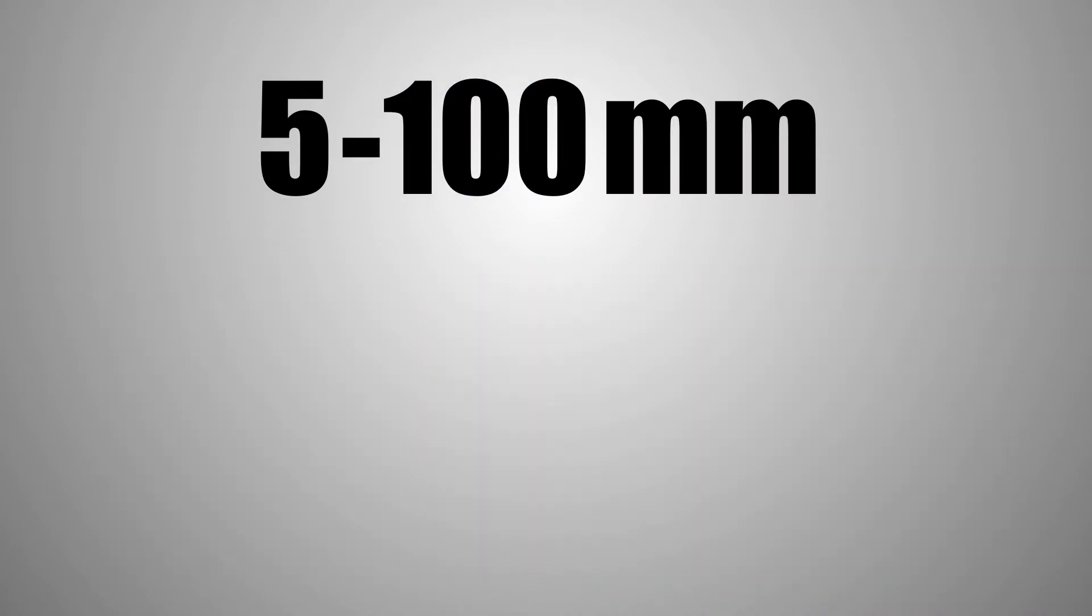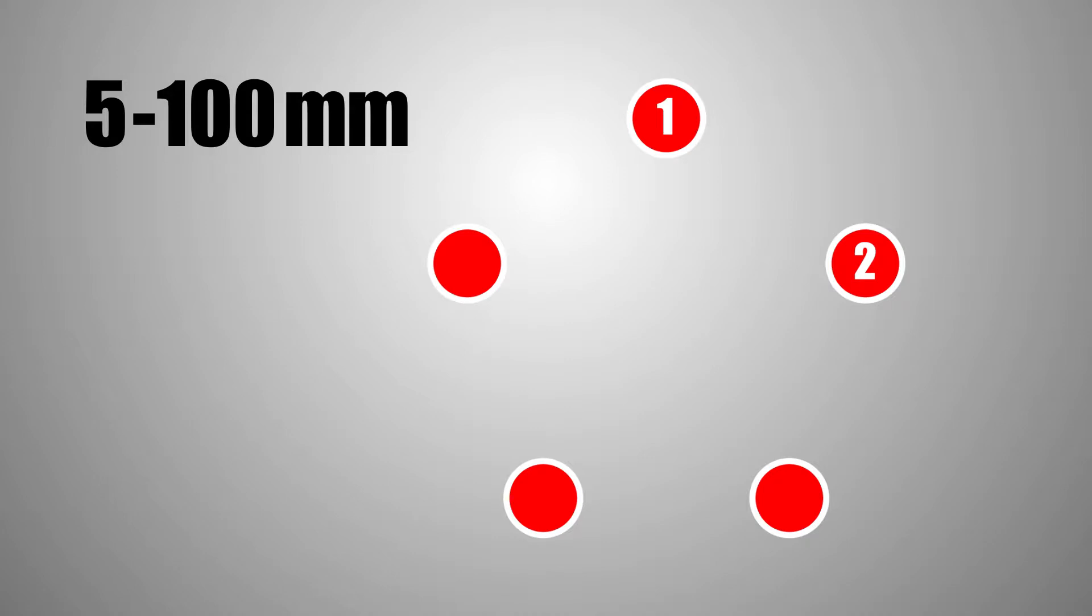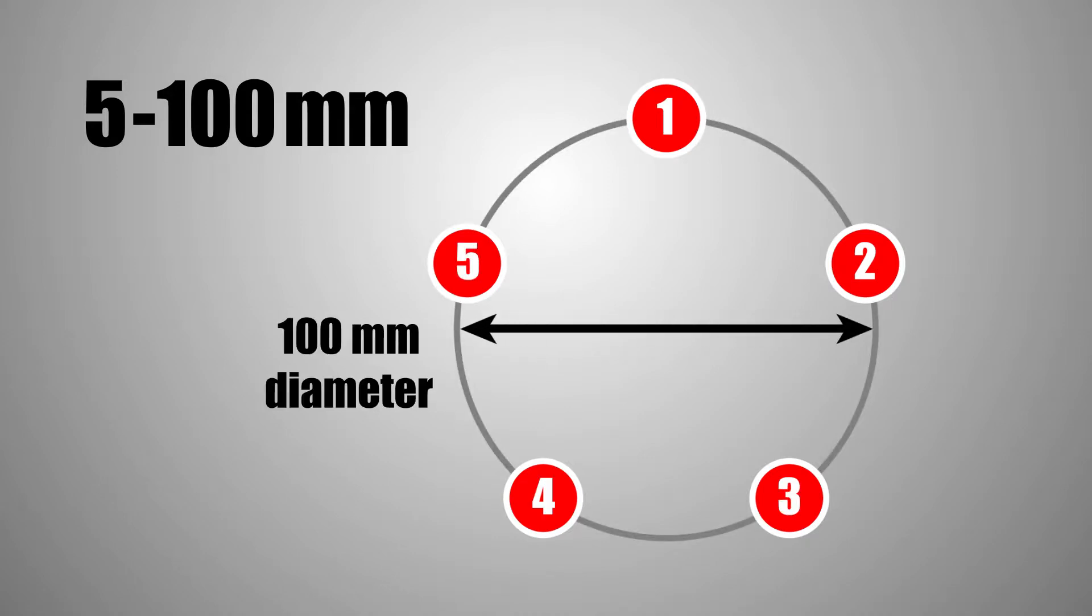For example, a five on 100 millimeter bolt pattern means that a wheel has five bolt holes that are evenly spaced along a 100 millimeter diameter circle.